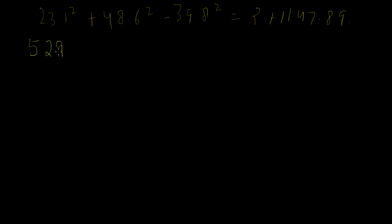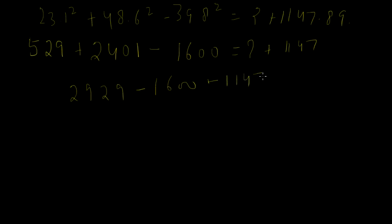Then 48.6 square, 2401 which is 49 square. So what I am taking is the approximate square of these numbers minus 1600 is equal to question mark plus 1147. Adding these two we get 2929 minus 1600 minus 1147.